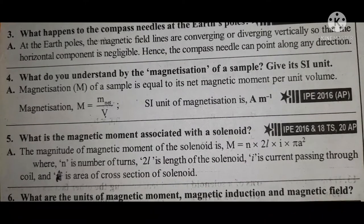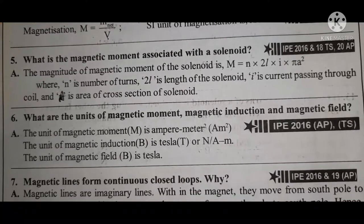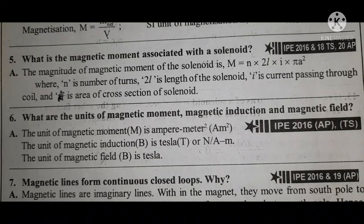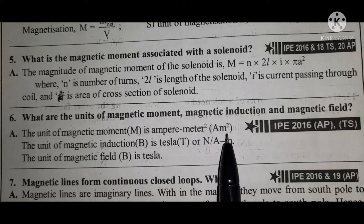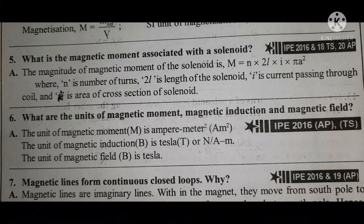Question six: What are the units of magnetic moment, magnetic induction, and magnetic field? The unit of magnetic moment M is ampere-meter squared (A·m²). The unit of magnetic induction is tesla. The unit of magnetic field is also tesla.